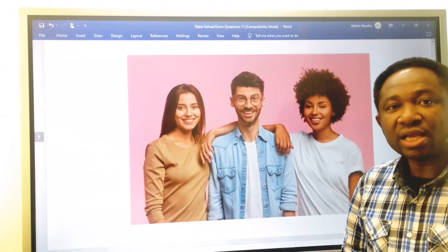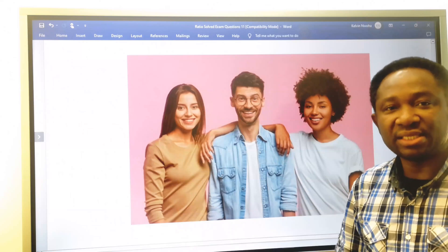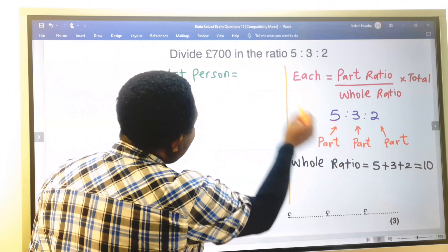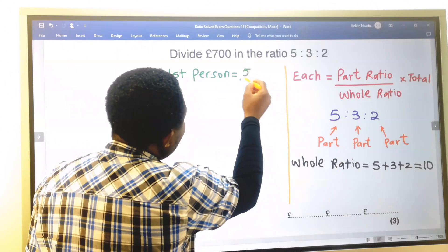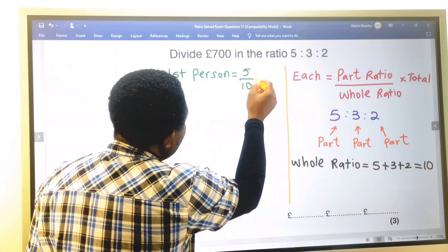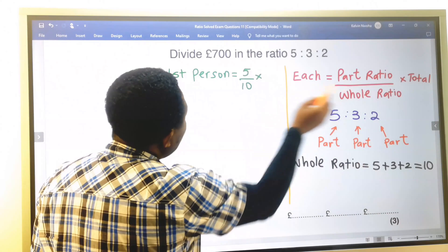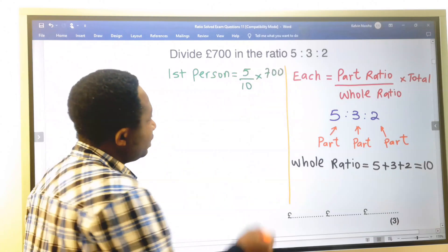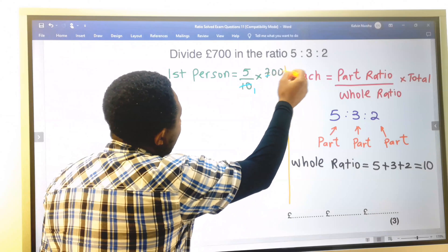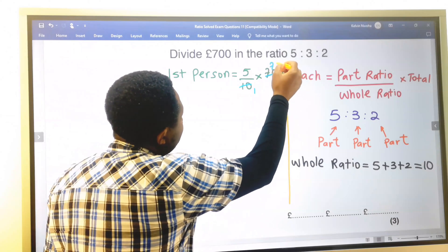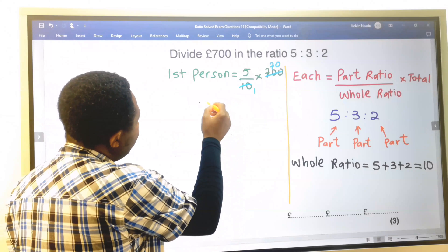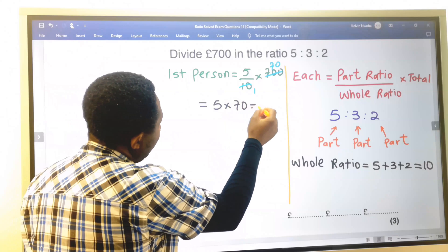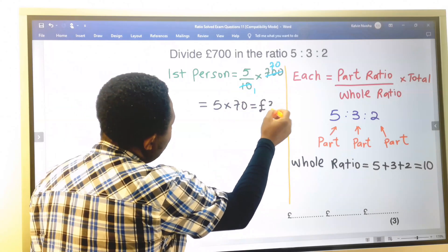Let's calculate how much the first person will get. This first person will receive the part is 5 divided by the whole is 10, multiplied by the total amount of money is 700. 10 here is 1 and 10 here is 70. And this first person will receive 5 times 70, which is 350 pounds.